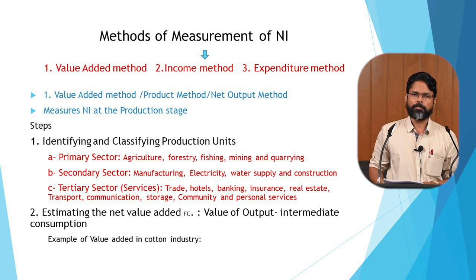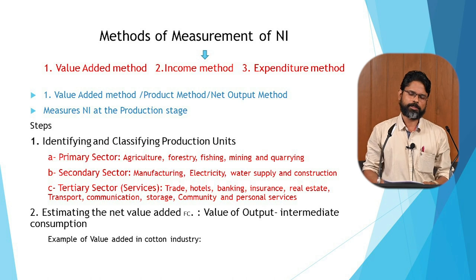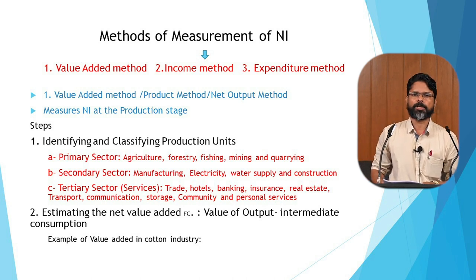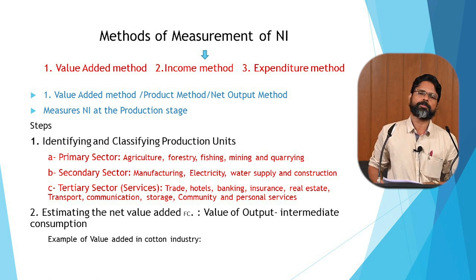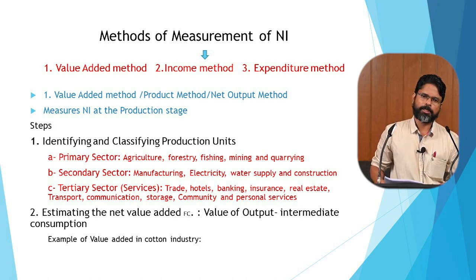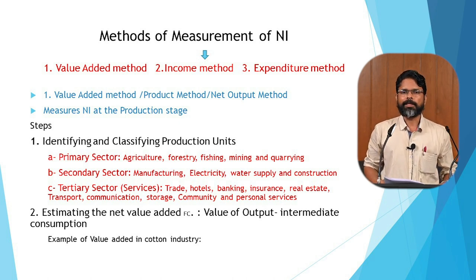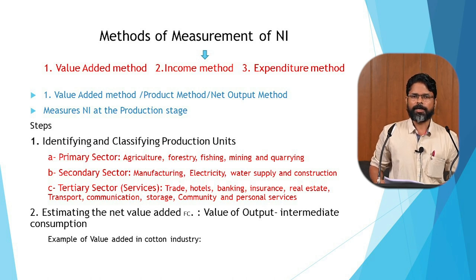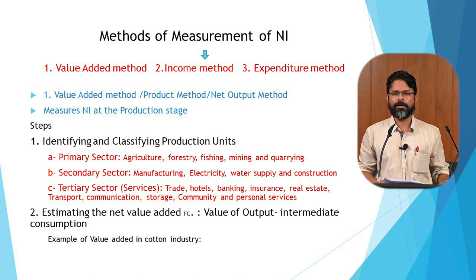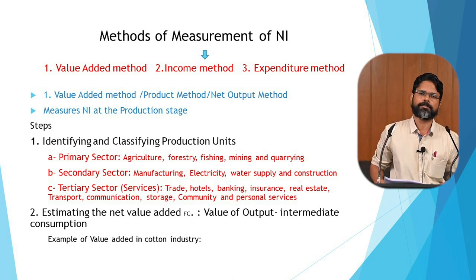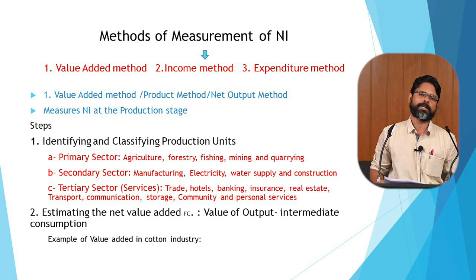There are various steps involved in this method. The first step is identifying and classifying production units. Numerous producers are there in the economy, ranging from the production of a safety pin to sophisticated aeroplanes. The first step in national income calculation is the identification and classification of these producers. For simplicity, there are three categories: primary sector, secondary sector, and tertiary sector. The primary sector's peculiarity is that it utilizes natural resources directly — agriculture, forestry, fishing, mining, and quarrying are the major activities.